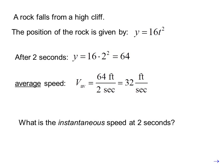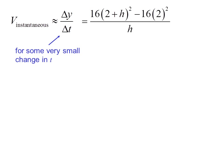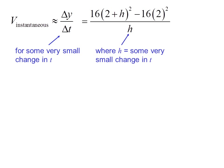What is the instantaneous speed at 2 seconds? Instantaneous velocity is approximately equal to delta y over delta t for some very small change in t. In this case we have 16 times (2 plus h) squared, minus 16 times 2 squared, all divided by h, where h is some very small change in t.